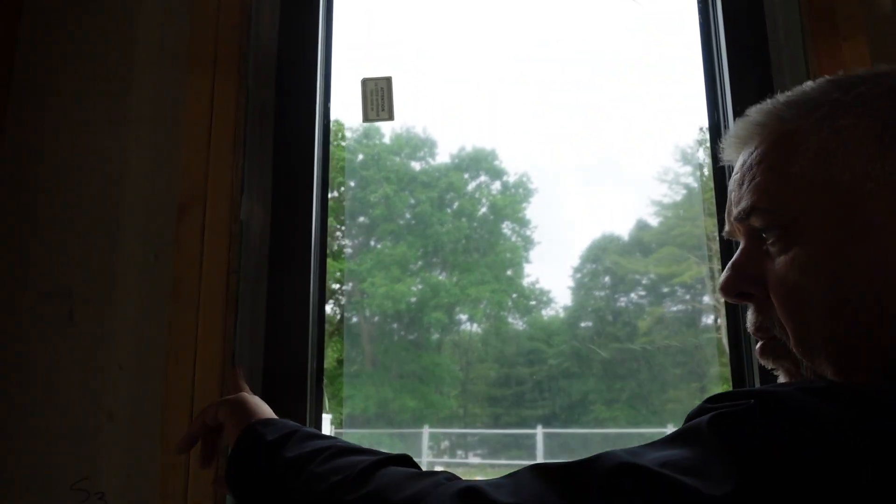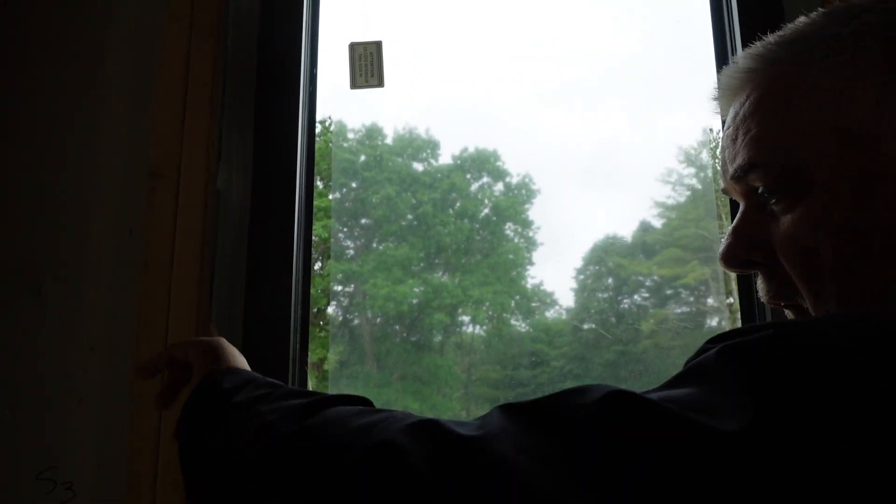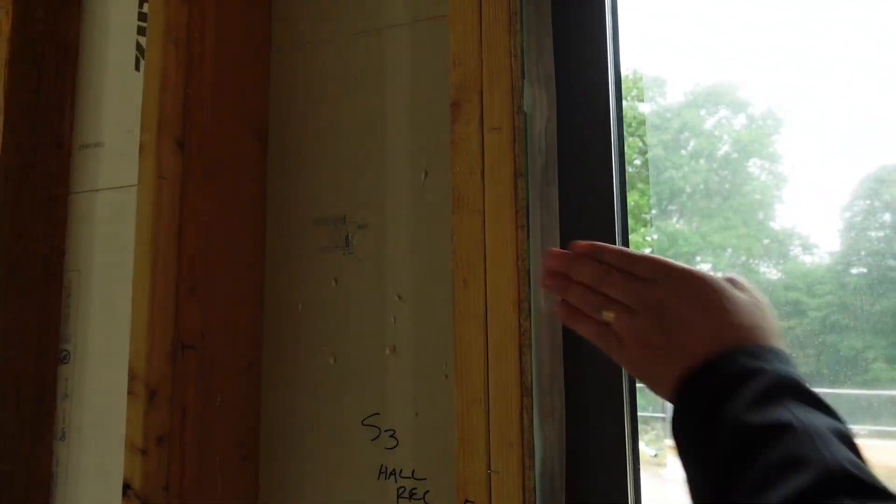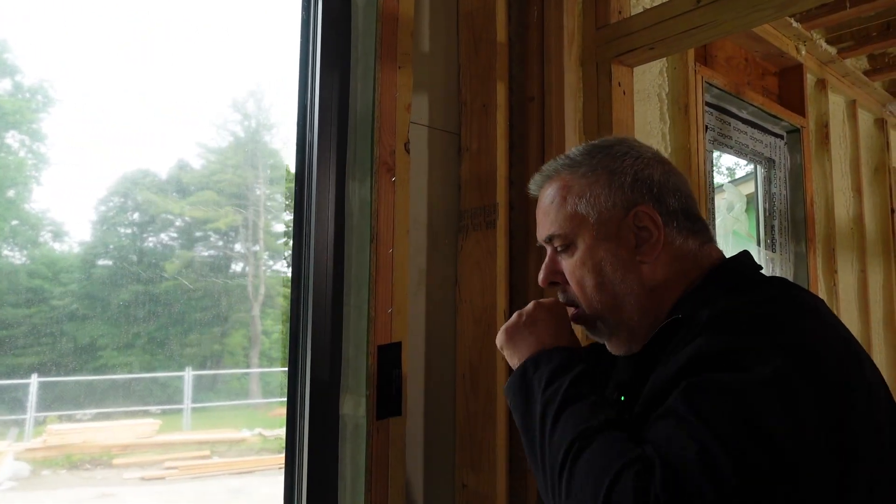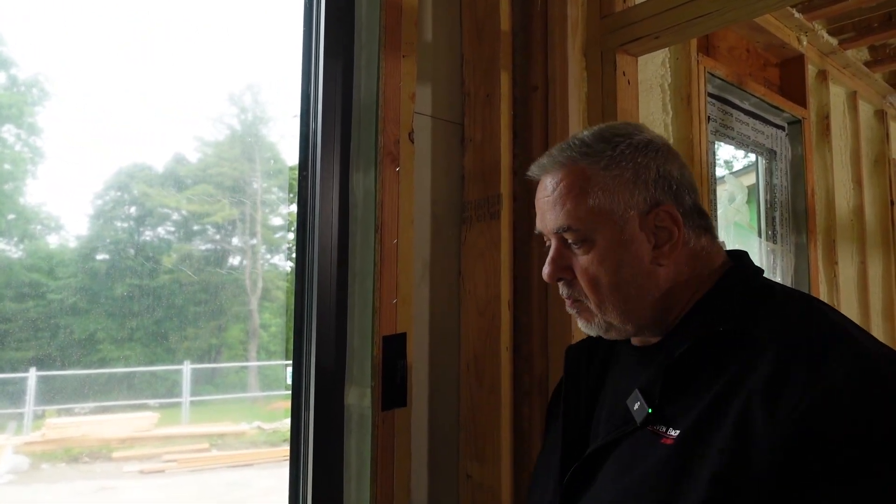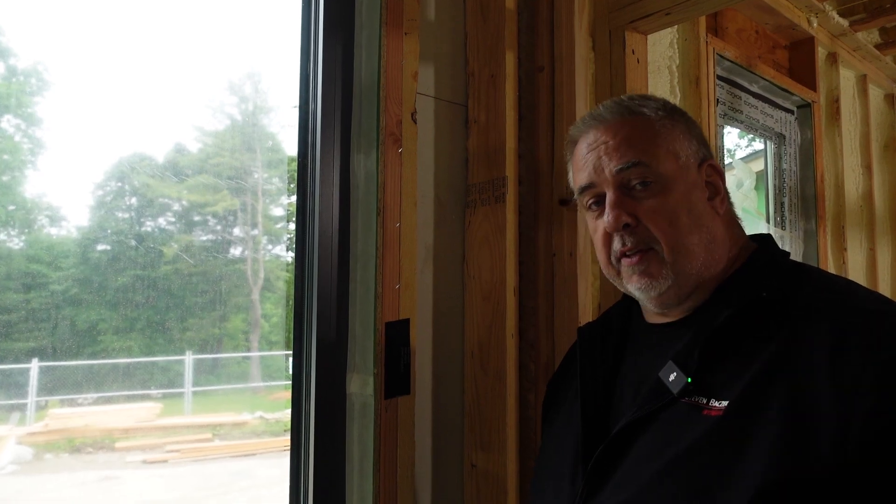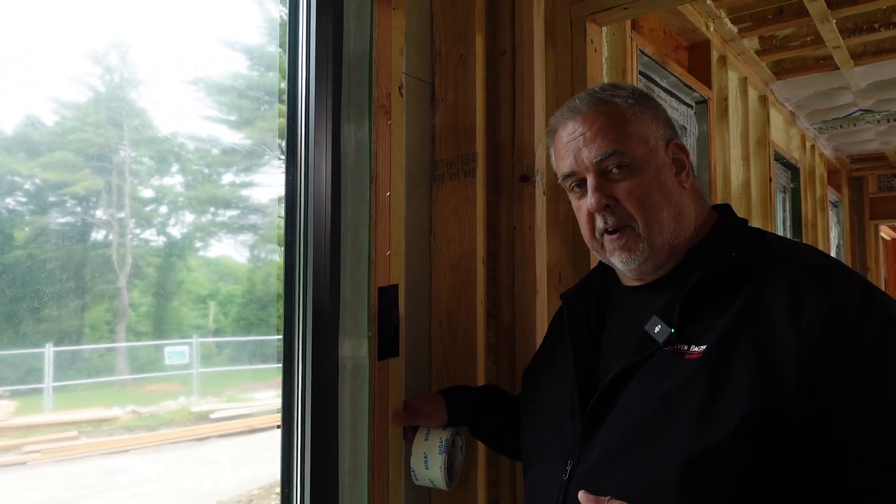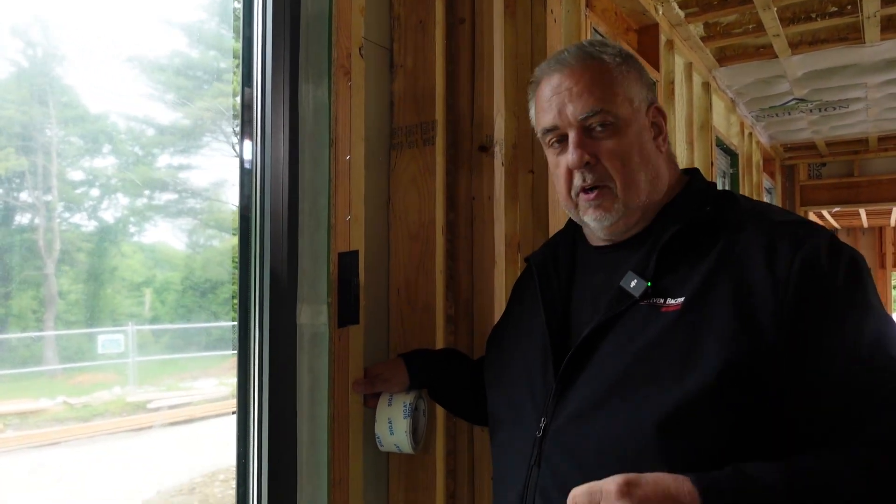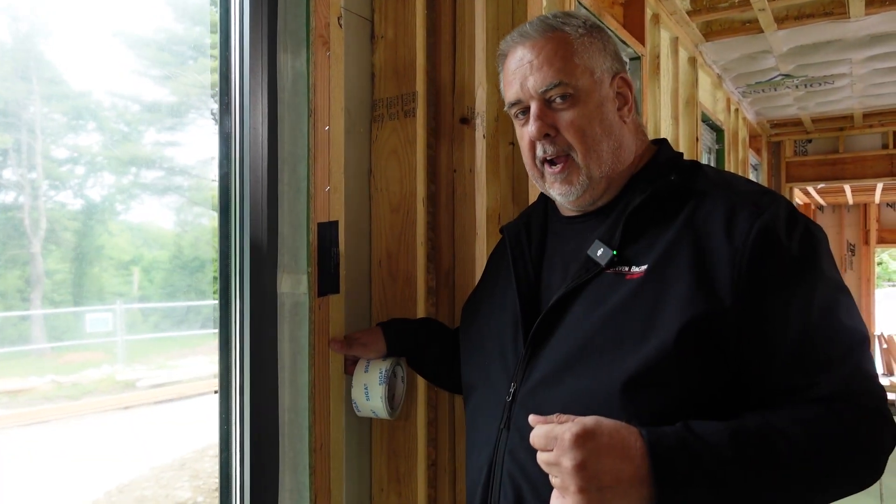So you can see now we've maintained that continuity as our weather-resistant barrier turns the corner inside. We've bridged our air sealing system from our weather-resistant barrier to our window. The window takes care of the air barrier till we get to this side, and then we bridge the rough opening again to our zip sheathing. Let's jump back to the studio. I got a nice beautiful detail of this jam section we can talk about.